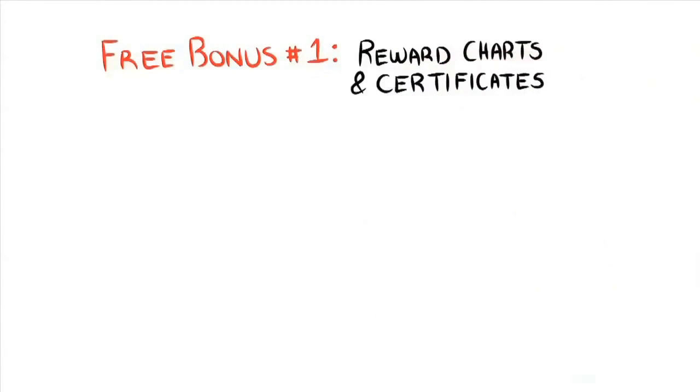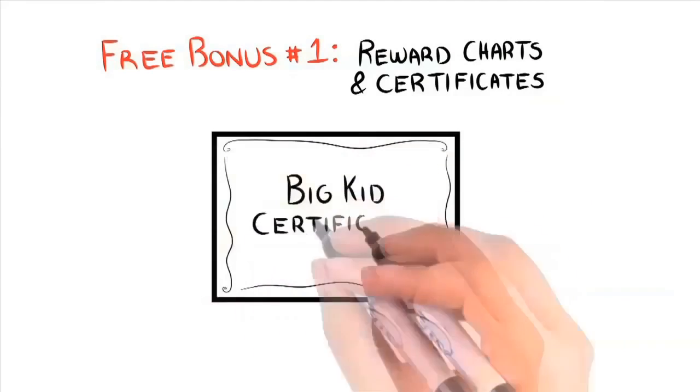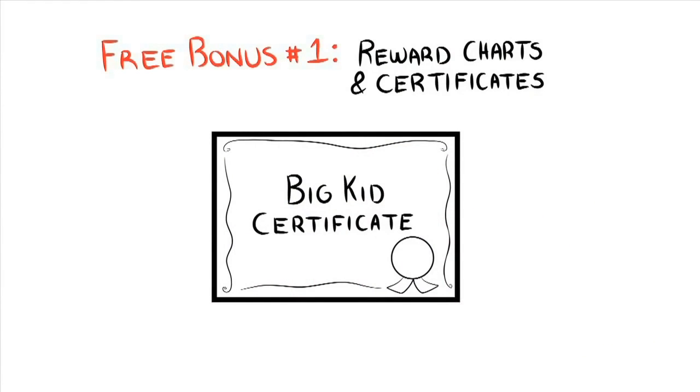Free bonus number one. This guide comes with free reward charts and certificates. This is a fun way for you and your child to track their progress. Using charts with different cartoon characters, your child will become motivated to quickly complete their chart. When the chart has been all filled up, you can then simply print out their own customized Big Kids certificate that they can display proudly in their bedroom or washroom. This is a twenty-nine ninety-five value but yours absolutely free today.